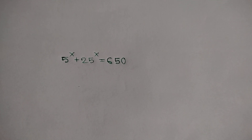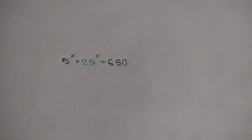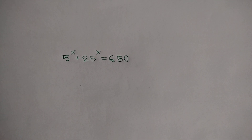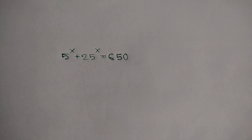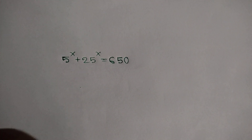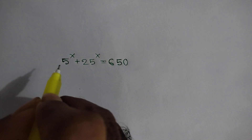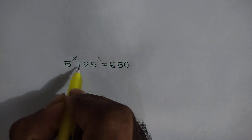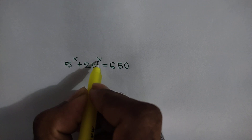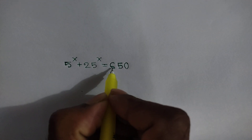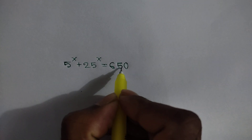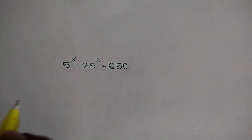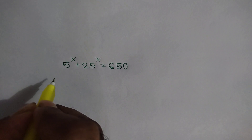Hi everyone. In this video I am going to show how to find the value of x where 5 to the power x plus 25 to the power x is equal to 650. Okay, let's go.